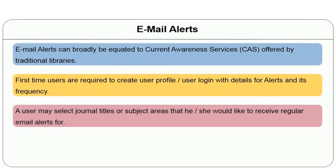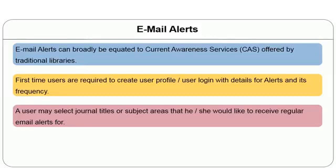Email alerts can broadly be equated to current awareness service, which was a traditional library service. The same can be replaced or fine-tuned with email alerts for better usage. A user first creates a user profile with login and password. Once created, alerts come automatically. There is also a provision to unsubscribe. The frequency of updates can be managed — for example, a user can choose to receive all alerts at one time per week, selecting a title, subject area, or regular interval.